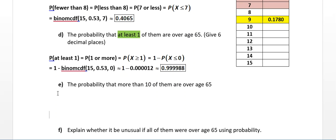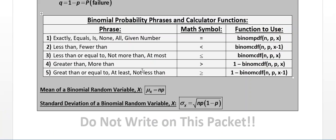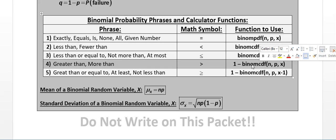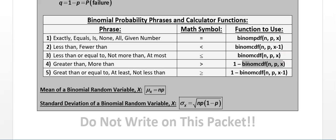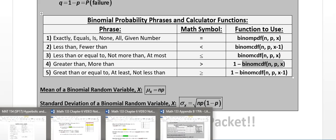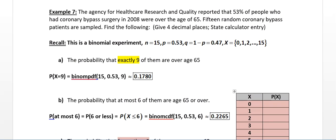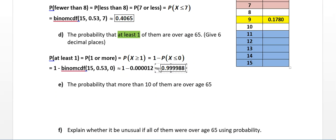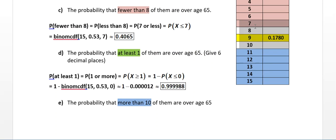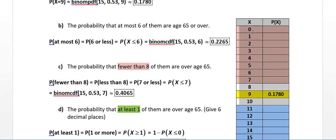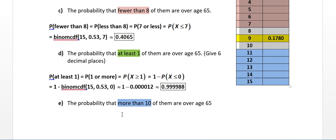Now for part E, I want the probability of more than 10. 'More than' means I use 1 minus binomCDF again. More than 10 means 11 through 15 — those are the probabilities I want. So I'll have binomCDF add up 0 through 10 and stop at 10, then subtract that from 1.